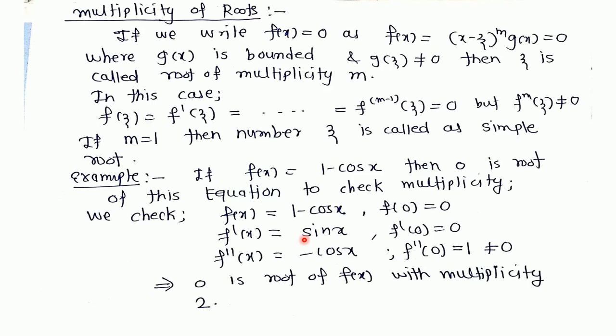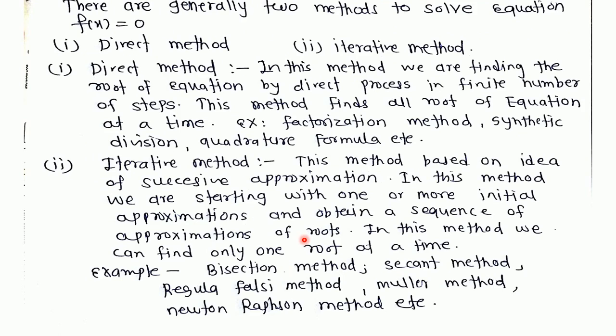After defining transcendental and polynomial equations, roots and multiplicity of roots, our aim is to understand methods to find the root of an equation. There are generally two methods for solving f(x) = 0: direct method and iterative method. In direct method, we find roots by a direct process, in a finite number of steps. This method finds all roots of the equation at one time.